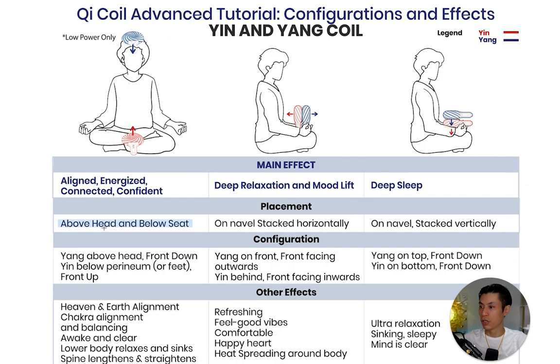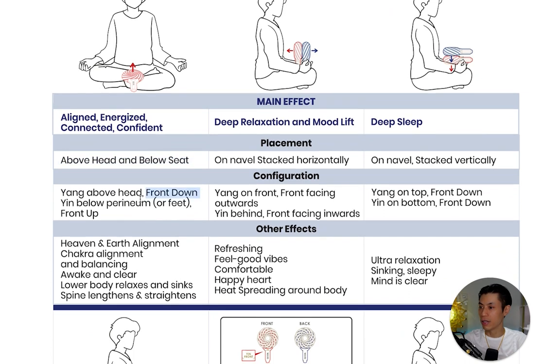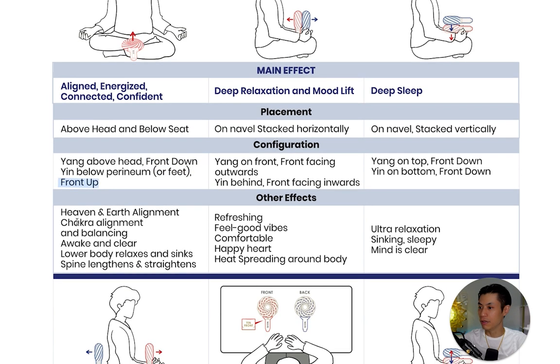You can place the yang coil directly on your head — if you're good at balancing, just keep it there — or wear a hat and place it on top of the hat so it stays. You can also lie flat on the ground with coils at the head and feet. The yang coil goes above your head with the front facing down, and the yin coil goes below your perineum or feet with the front facing up. Other effects include heaven and earth alignment, chakra alignment and balancing, feeling awake and clear, lower body relaxing and sinking, and the spine lengthening and straightening — a sensation known in tai chi and qigong as zhong ding, the ultimate centeredness, alignment, and balance.